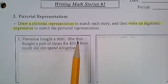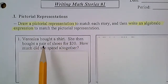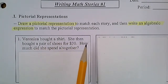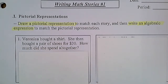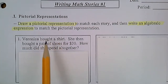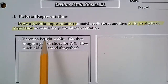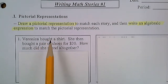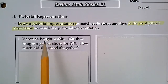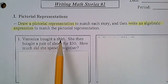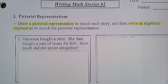So, Veronica bought a shirt. She then bought a pair of shoes for $30. How much did she spend altogether? Well, if she's buying a shirt, think about your bank account or your piggy bank — are you adding to your piggy bank? Are you subtracting, multiplying, or dividing? So if you're buying a shirt with your own money, you're subtracting. It's a negative concept.